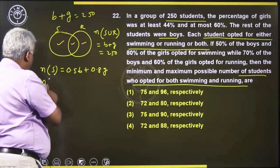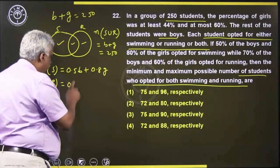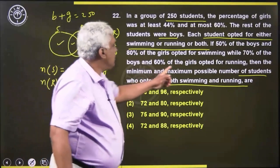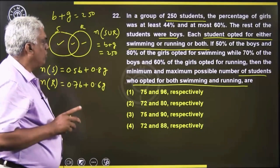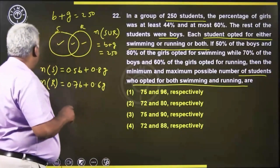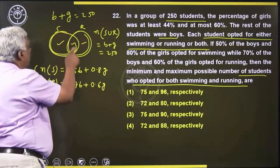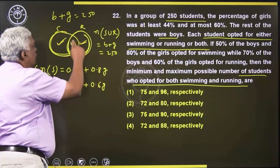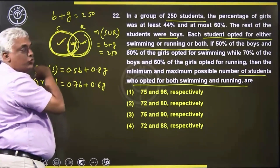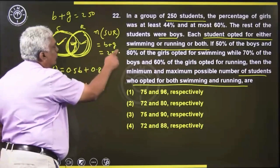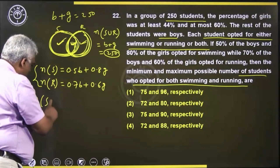And the number of people doing running is 75% of boys and 60% of girls, so 0.7B plus 0.6G. Now, if you add all people doing swimming and all doing running, the intersection — both swimming and running — gets counted twice. So, the number doing both equals swimming plus running minus the union, which is 250.